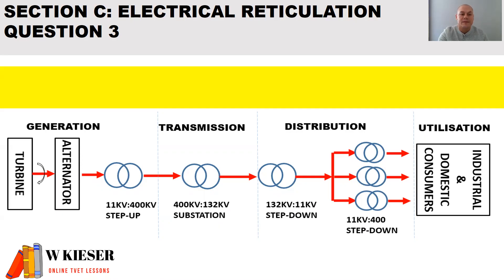Generation is where the power station generates electricity. An alternator steps up the voltage from 11,000 volts to 400,000 volts. In the transmission section, a transformer steps down the voltage from 400,000 volts to 132,000 volts. Then we get the distribution network where another transformer steps the voltage down from 132,000 volts to 11,000 volts, and then we get to the feeder network system. The last section is utilization, where we have our three-phase and single-phase customers.